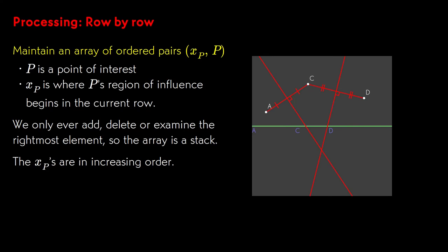These rules suggest a procedure and a data structure. We will be processing a set of feature points from left to right, and we will be maintaining a set of X-coordinates where their regions of influence begin on the row. The X-coordinates will also be in increasing order left to right. We keep an array of pairs with the feature points and their X-coordinates. In the algorithm, we add, delete, and examine points only at the right end of the array, so the array is actually a stack. Its maximum depth is the width of the image.